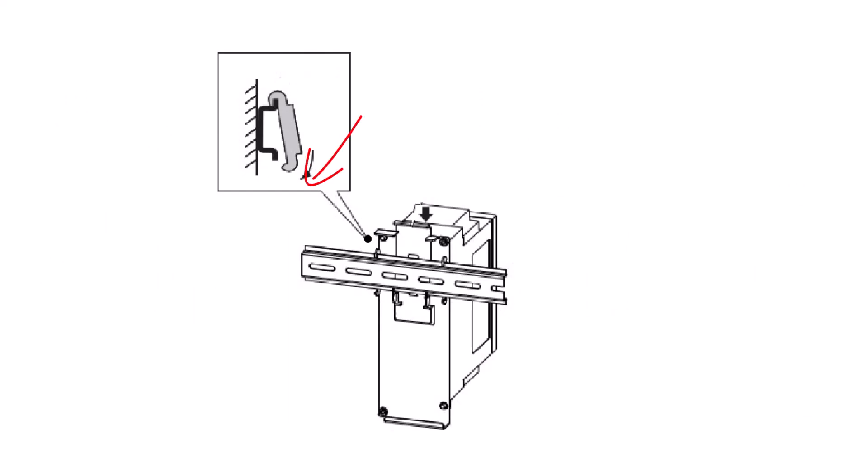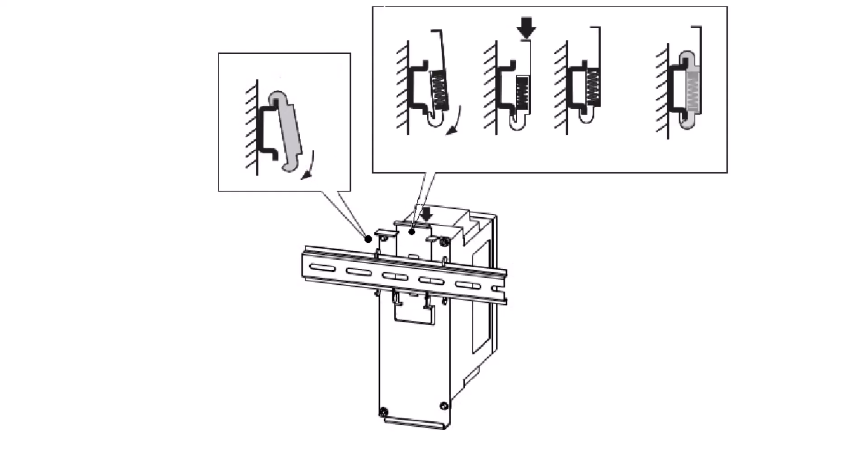Gently swing the drive assembly downward, applying firm downward pressure on the assembly. Last, snap the bottom portion of the DIN rail kit into place and release.